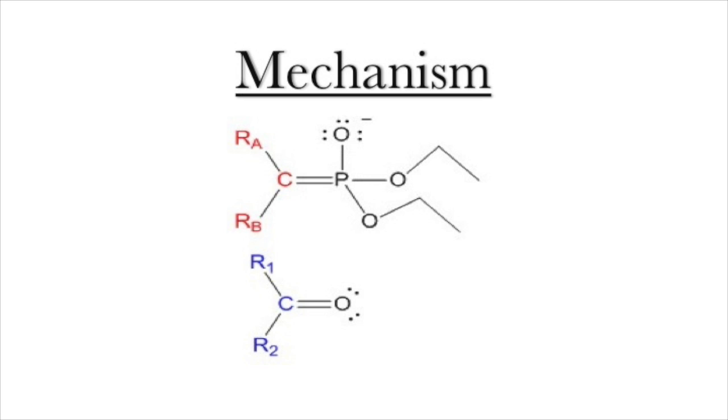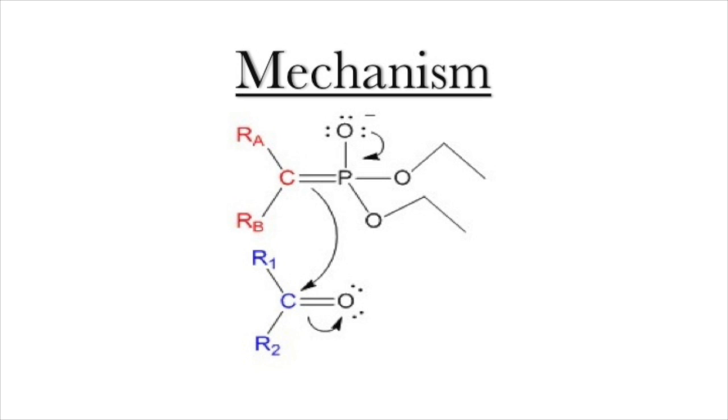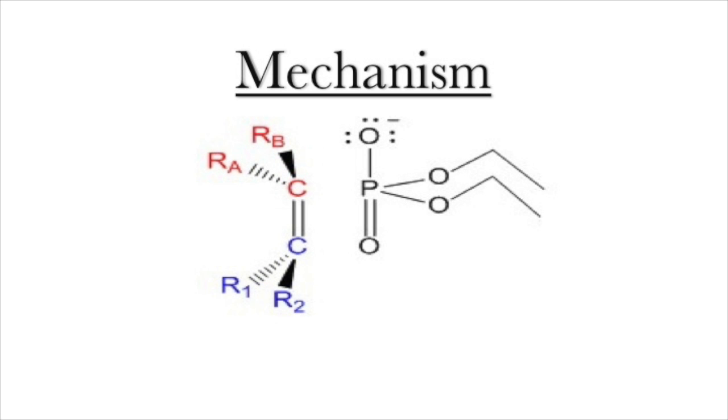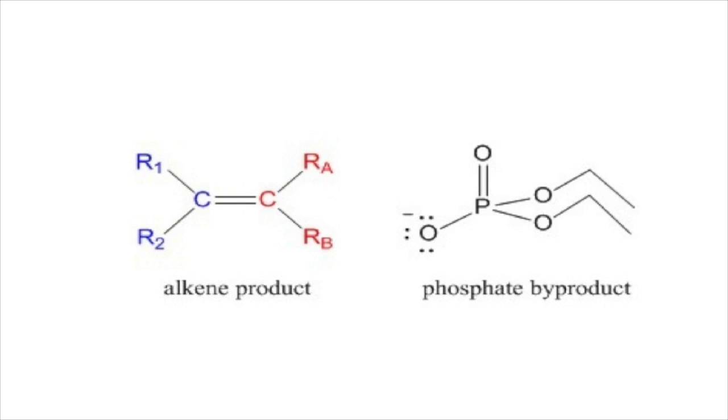Once we have the Horner-Emmons reagent, we can go ahead and bring back the carbonyl. The phosphate oxygen will close down. The alkene on the phosphate will attack the carbonyl carbon, opening up the carbonyl, which then will attack the phosphate group. This gives us a super strained four-membered ring, which will open back up to give our final product alkene. Cis or trans is just determined by the orientation of the starting material.